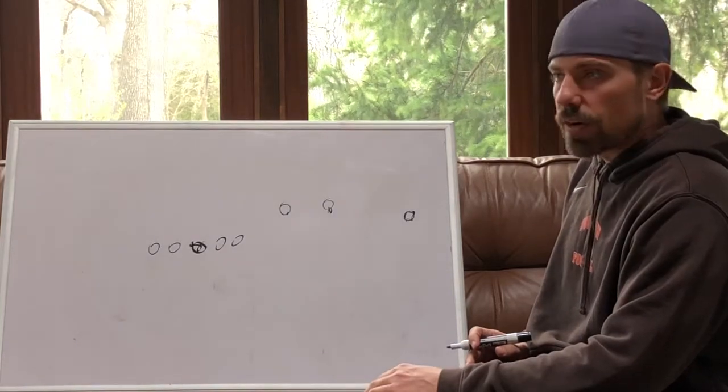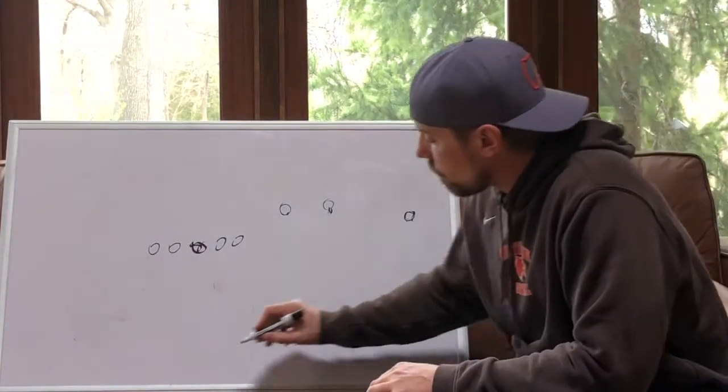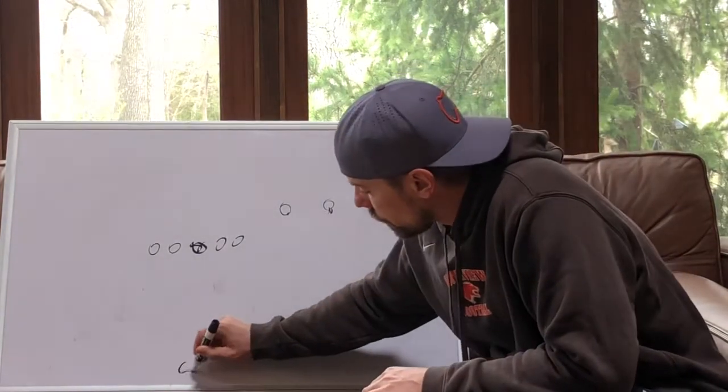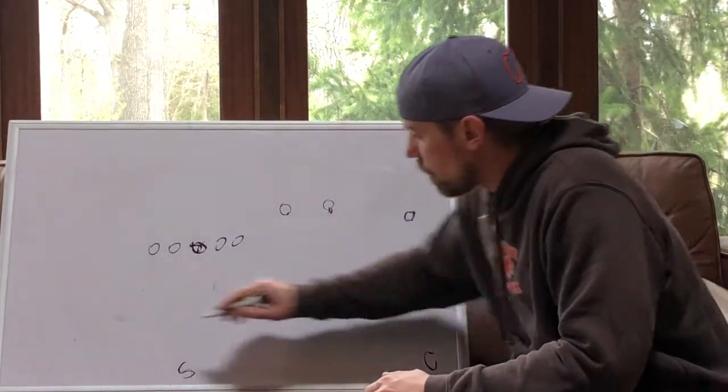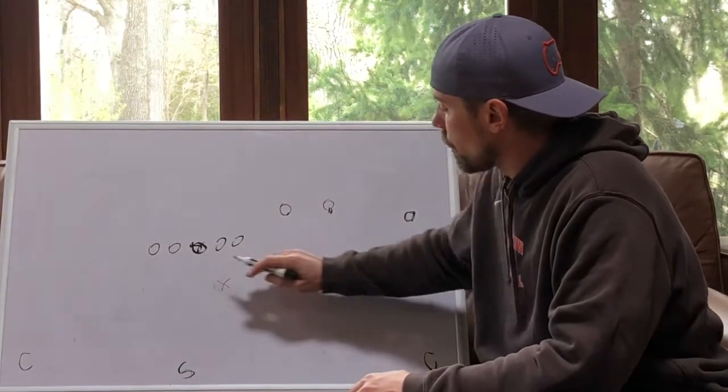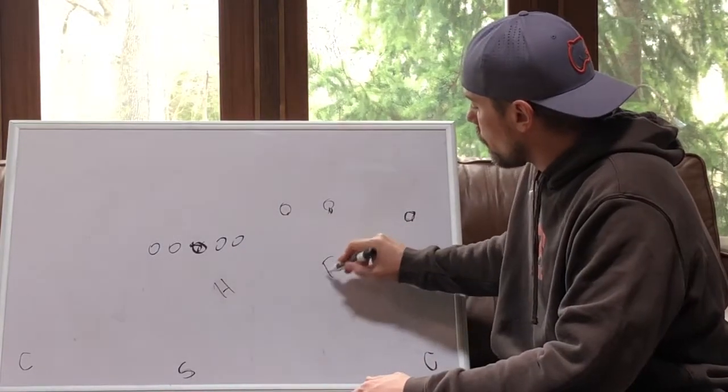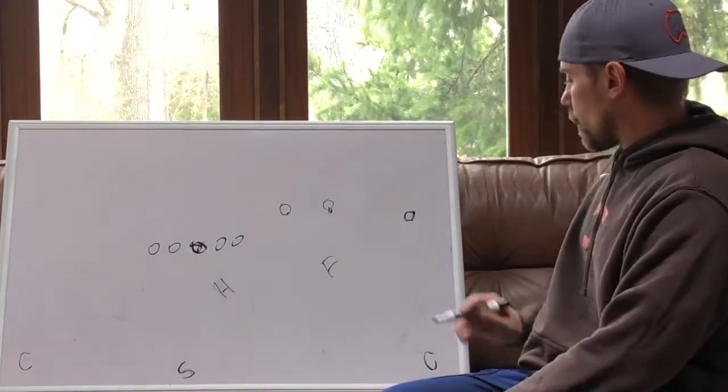Versus zone, we're going to try to layer. I'm just going to give you a quick example. Let's say cover three here. Safety, corner, corner, and let's just draw this half of the field. We've got our hook player. I'm going to draw it as a hook player here. We've got our flat player. This would be a dig-post-under concept.